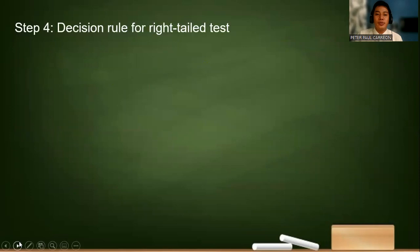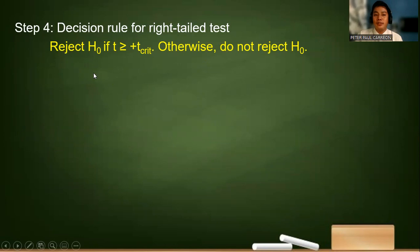This t-computed value will be now compared to the critical value. For our decision rule, we use the right-tailed test. When the t-computed value is greater than or equal to the positive t-critical, we reject the null hypothesis. But otherwise, we do not reject it.